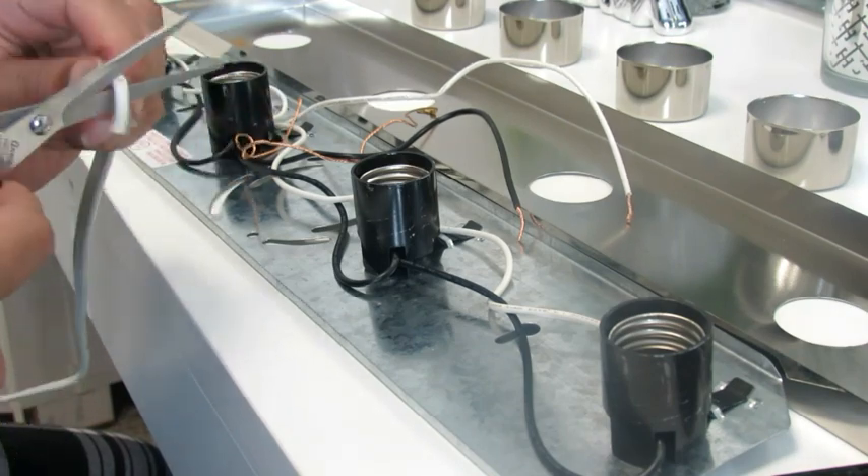Now you have to do the same. The smooth side of the extension cord goes with the black wire.